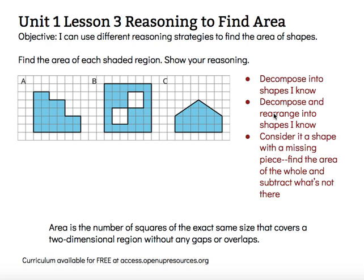With shape A, I'm going to use the first strategy: decompose into shapes I know. I'll break this stair-step shape into rectangles. I see divisions that split it into three different rectangles. Then I can use an array to find the area of each rectangle and add them together. That first rectangle has 10 squares, the second has 8 squares, and the last has 4 squares. So 10 plus 8 plus 4 gives a total of 22 square units.